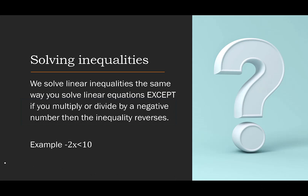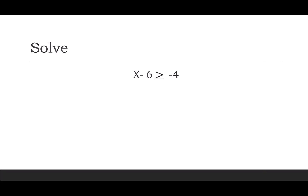Let's look at this quick example. I have negative 2x is less than 10. To isolate the x I need to divide by negative 2. So I divide the left side by negative 2 and the right side by negative 2. Because I'm dividing by a negative, I flip the inequality to greater than, then 10 over negative 2 gives me negative 5. So now we're ready to start with our regular examples.